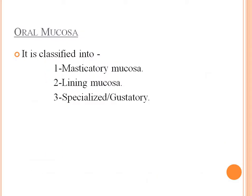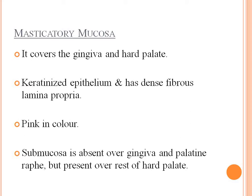The oral mucosa is classified into: masticatory mucosa, lining mucosa, and specialized gustatory mucosa. The masticatory mucosa covers the gingiva and hard palate. It has a keratinized epithelium with a dense fibrous lamina propria. It is pink in color. Submucosa is absent over the gingiva and palatine raphe but present over the rest of the hard palate.